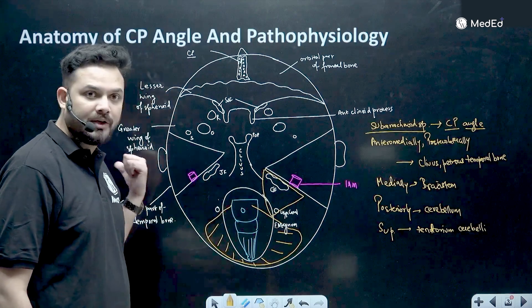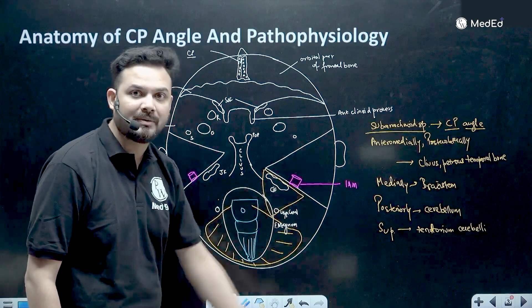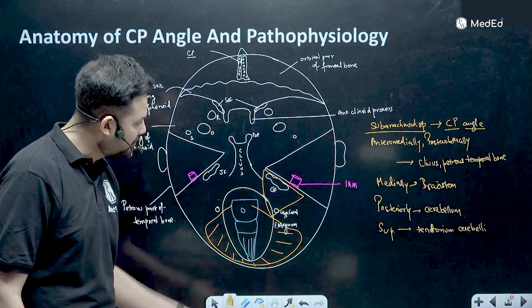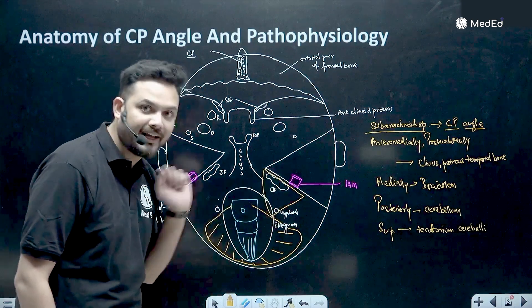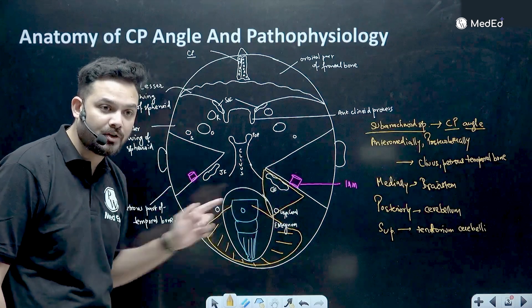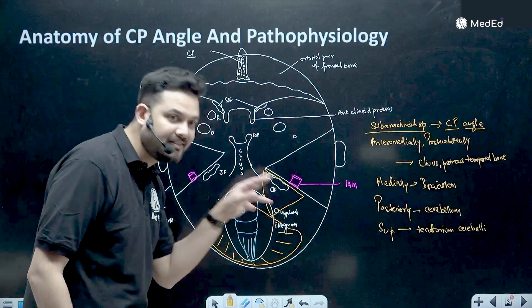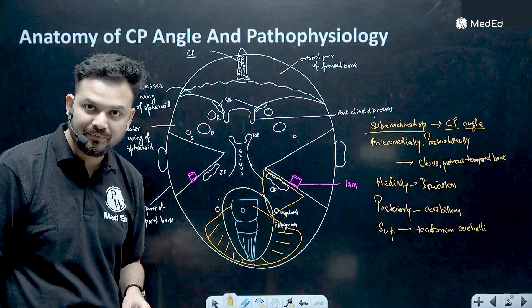What I told you in the beginning was that it is a CP angle pathology. That means vestibular schwannomas are the ones which are happening in this particular triangle. So when we do an MRI, we are going to see that this is the angle involved in this particular tumor.